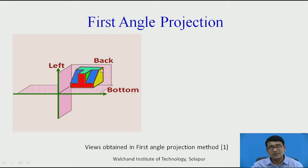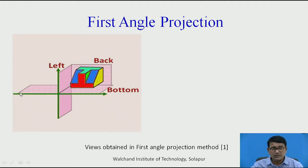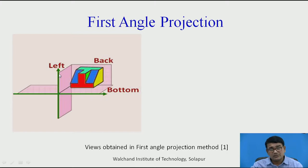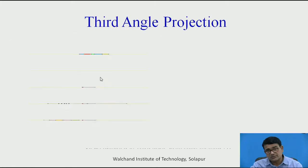In the first angle projection method, when the vertical plane and horizontal plane intersect to give four quadrants, the object is placed in the first quadrant. Whatever shadow you get on the vertical plane and horizontal plane is called the first angle projection method.